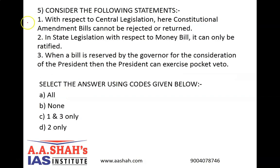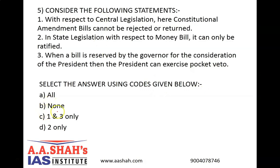Let's move on. Question number 5. Consider the following statements. 1. With respect to central legislation, constitutional amendment bills cannot be rejected or returned. 2. In state legislation, with respect to money bills, they can only be ratified. 3. When a bill is reserved by the governor for the consideration of the president, then the president can exercise pocket veto. Select the answer: A) All, B) None, C) 1 and 3, or D) 2 only.